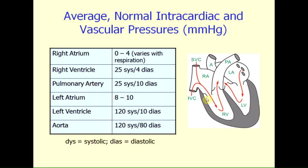Right ventricular pressure has a peak pressure, or what we call systolic pressure, of typically about 25 millimeters of mercury. And its minimal pressure will be about 4 millimeters of mercury, very similar to what the right atrial pressure is.